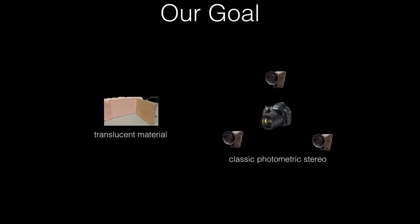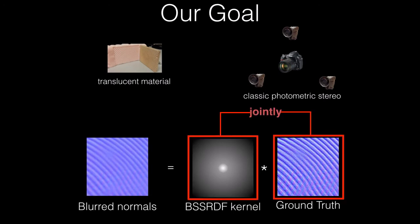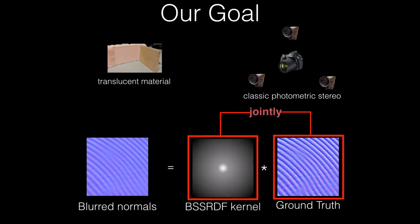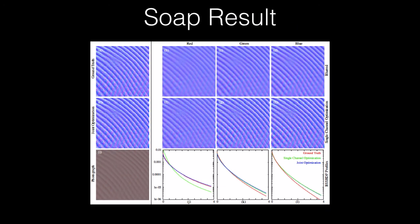Our goal is to make classic photometric stereo work correctly with globally planar, homogeneous translucent materials by jointly estimating the BSSRDF kernel's reflectance parameters and ground truth surface normals as the solution to a nonlinear optimization problem. For more details, please refer to our paper. Thanks.